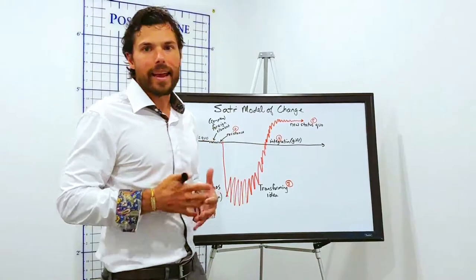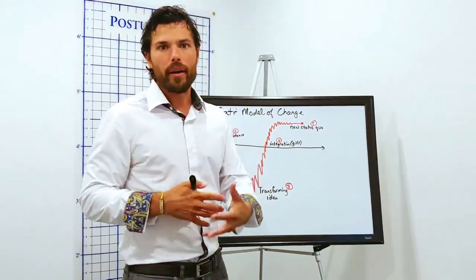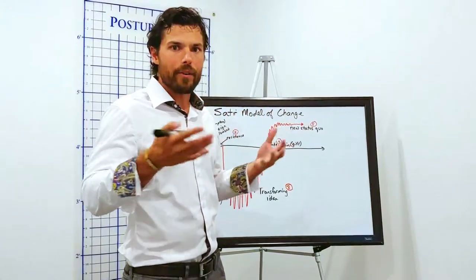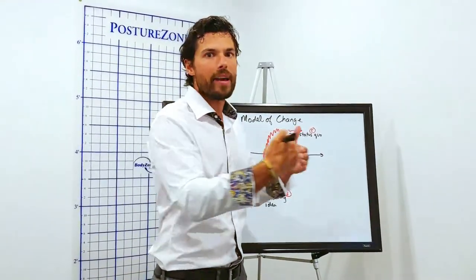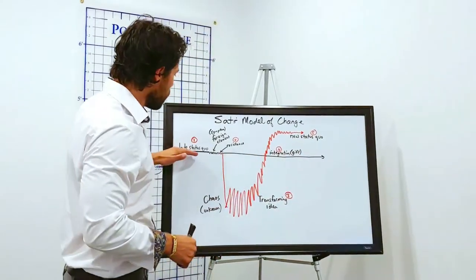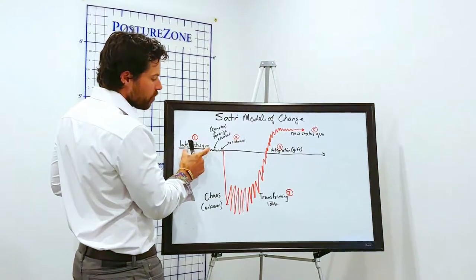She describes it first as called the late status quo and the late status quo is our life experience just kind of going as per usual. So I'm just going along, going day to day, going to my work, going home, going to have fun, going to work out, whatever your life kind of entails that you're doing. And it's called the status quo. So life as usual.